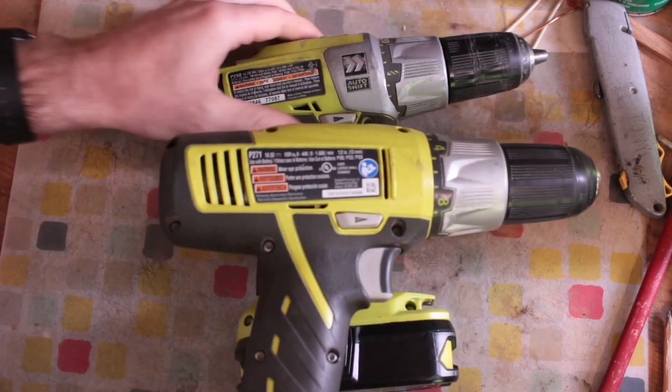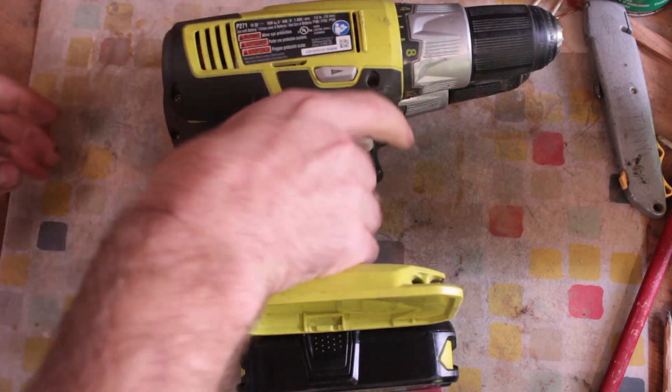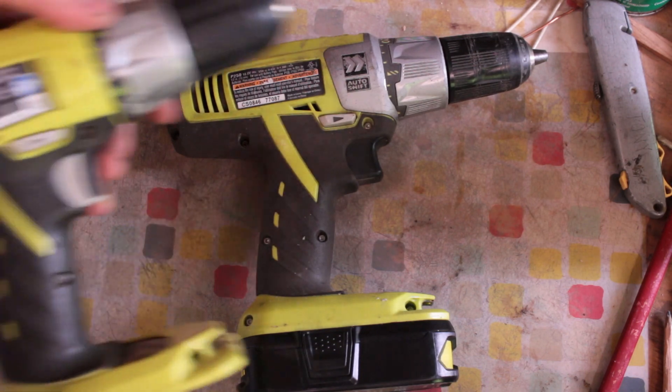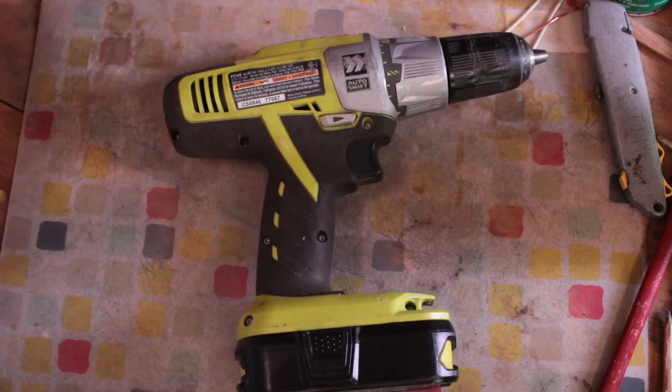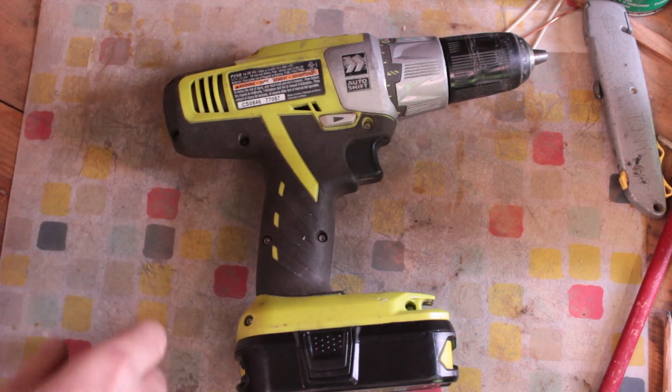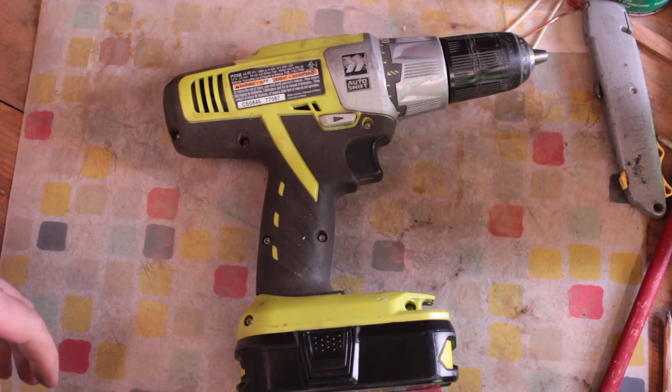This one's much lighter, slimmer. I'm not sure what the auto shift does inside but this drill is much lighter. This one's the P271 which came out after this one. So the auto shift never took off for good reason.